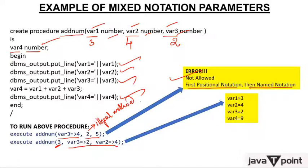The moment you run this, variable1 is having value three, variable2 is having value four, variable3 is having value two, and the sum is three plus four plus two equals nine. So now you are getting the correct answer.